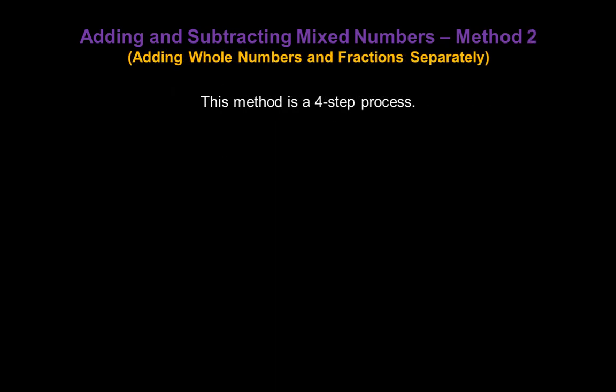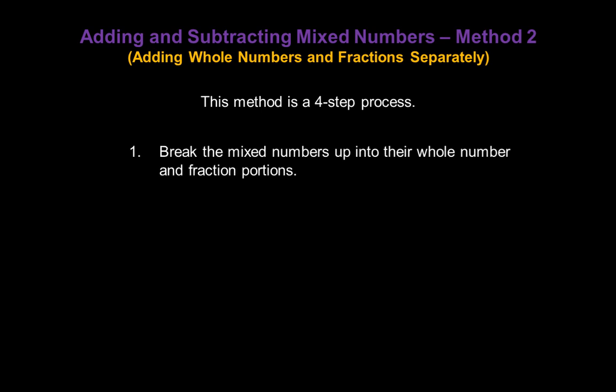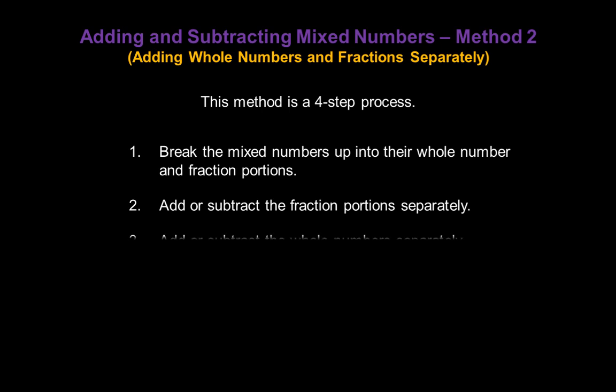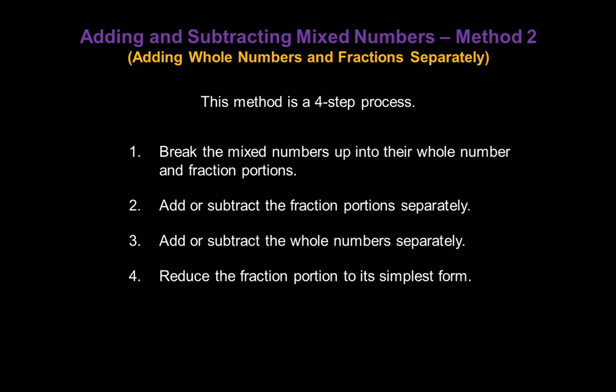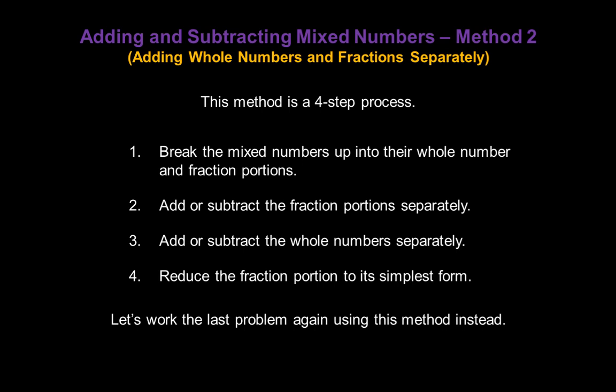Now let's look at method two — adding whole numbers and fractions separately. This is a four-step process. Step one: break the mixed numbers up into their whole number and fraction portions. Step two: add or subtract the fraction portions separately. Step three: add or subtract the whole numbers separately. Step four: reduce the fraction portion to its simplest form. Let's work the last problem again using this method — we should still get the same answer of nine and a half.